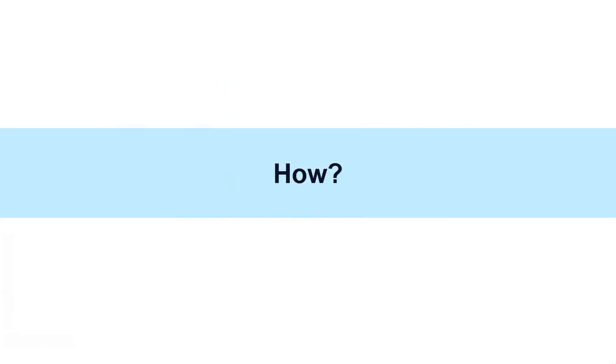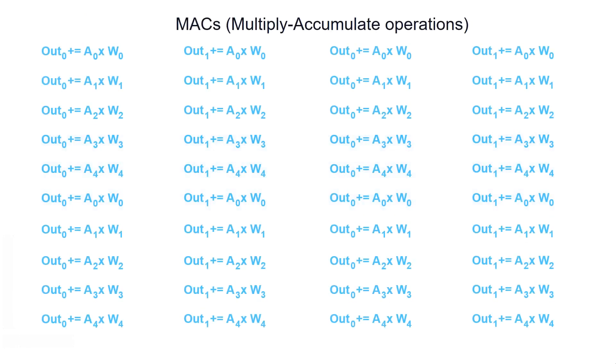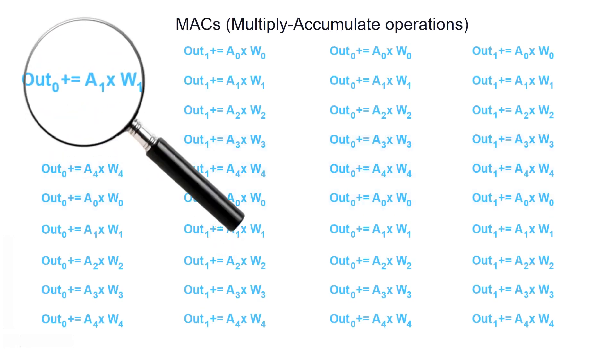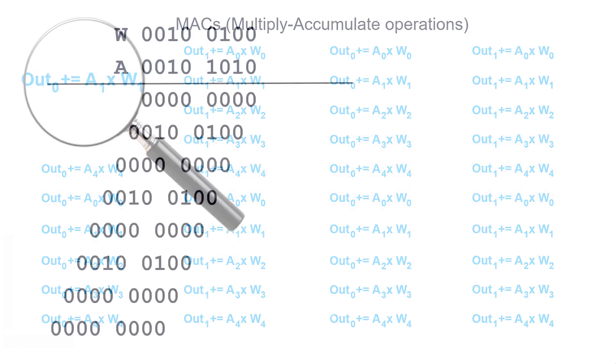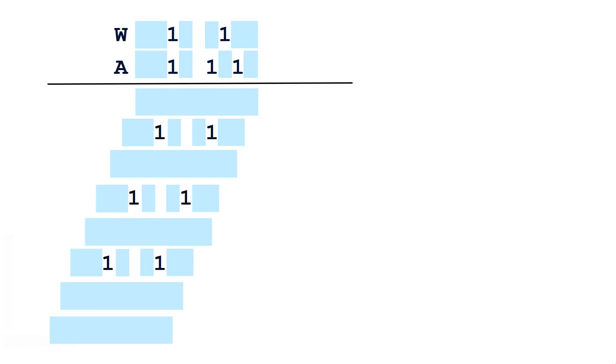To understand how Leconic exploits the bit sparsity, we look into the fundamental operations of DNNs, the MACs. The dominating operation of each MAC is the multiplication of an activation and weight. If we look at one such multiplication closely, we find that there are lots of ineffectual zero bits that do not affect the final product result. Leconic skips this ineffectual computation by only processing the effectual one bits.